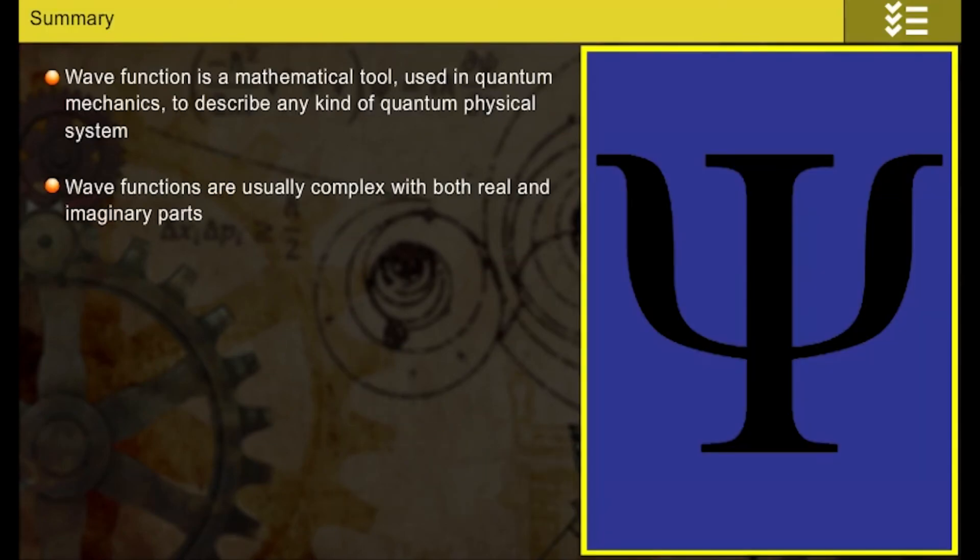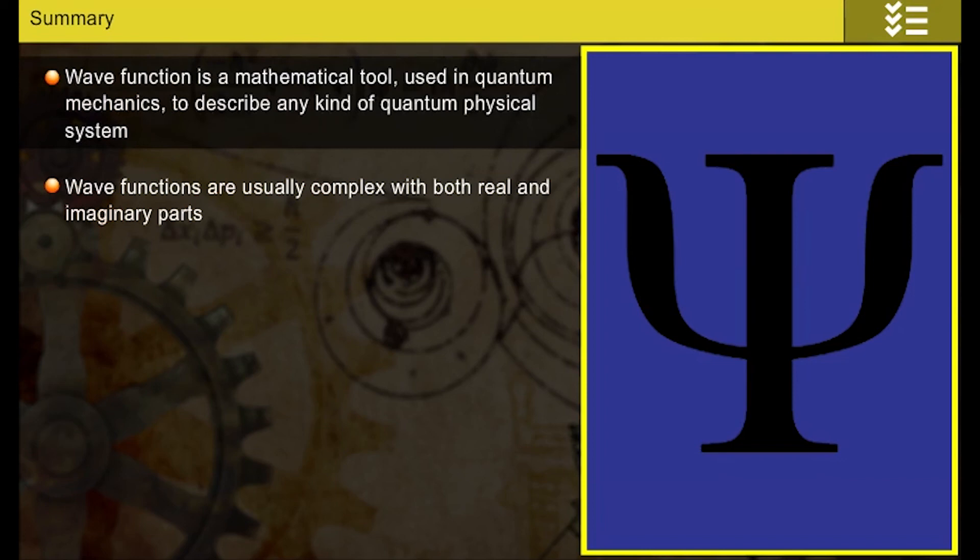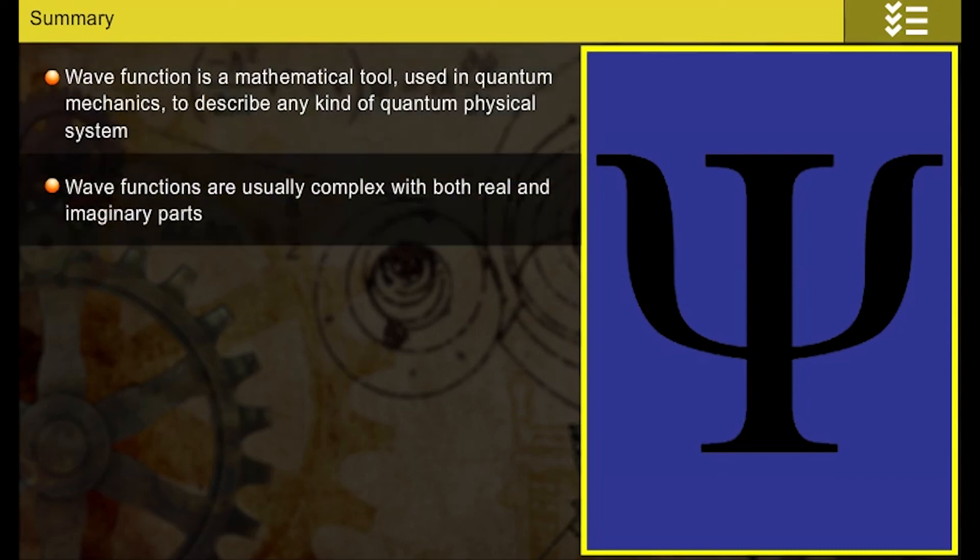Summary: Wave function is a mathematical tool used in quantum mechanics to describe any kind of quantum physical system. Wave functions are usually complex with both real and imaginary parts.